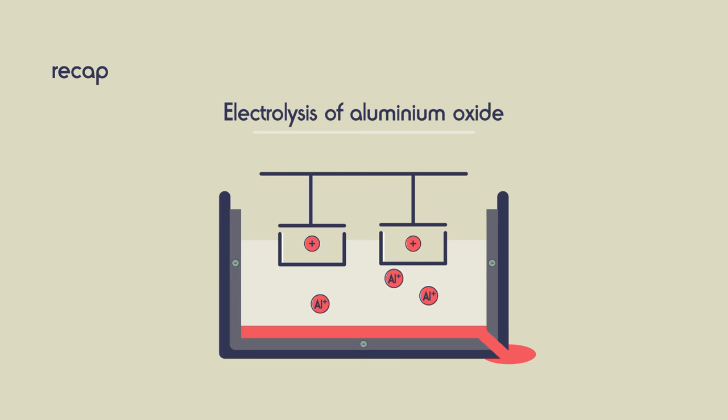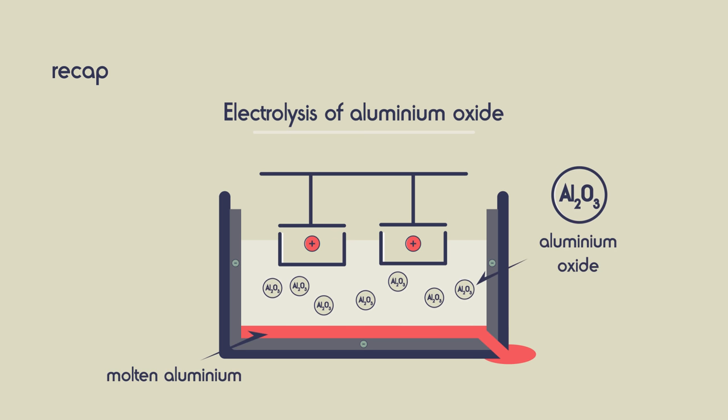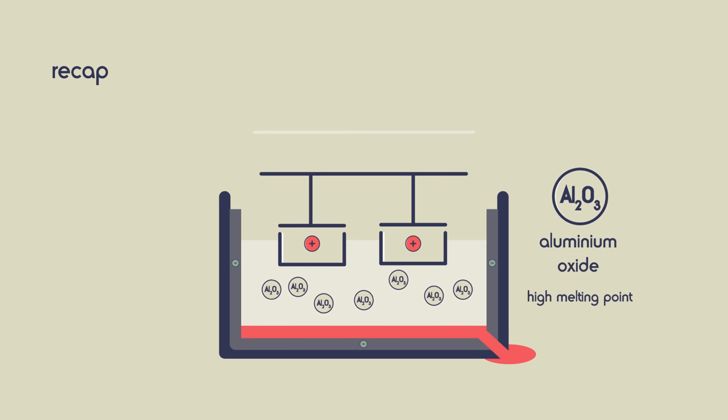So from this video you should know that to extract aluminium, electrolysis is used. Aluminium oxide needs to be molten for the ions to move through it and so is dissolved in cryolite to lower the melting point.